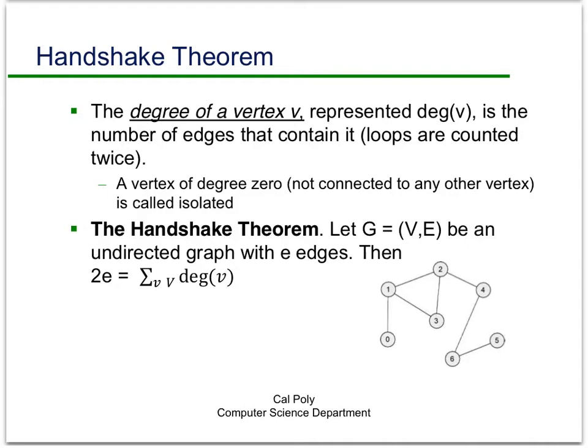Here's a picture of a graph. Let's talk about the degrees of some of these vertices. Vertex 1 has degree 3, vertex 0 has degree 1, vertex 6 has degree 2, and vertex 5 has degree 1.